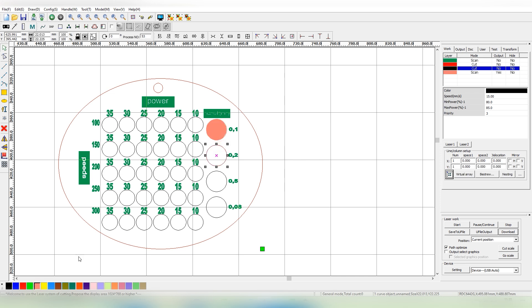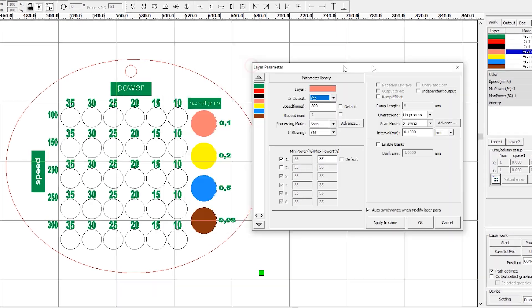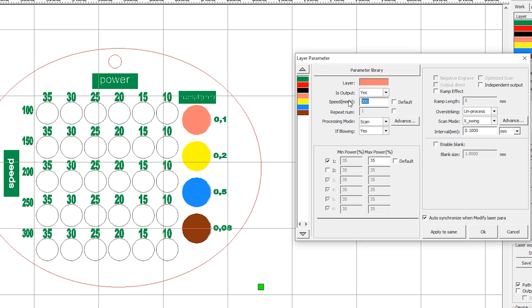Go back to the control program. There are four rectangles on the right side. Assign them different colors and go to settings. Select the desired speed and power from the already engraved table and assign these values to all the rectangles.